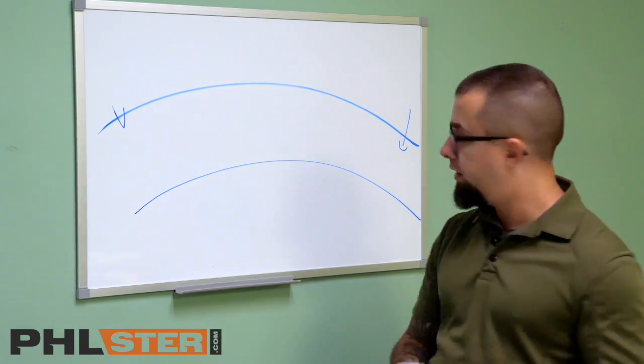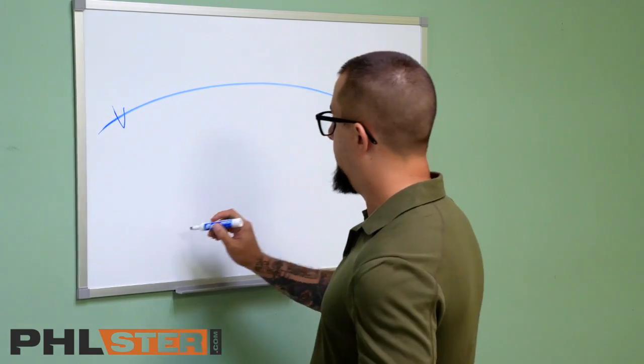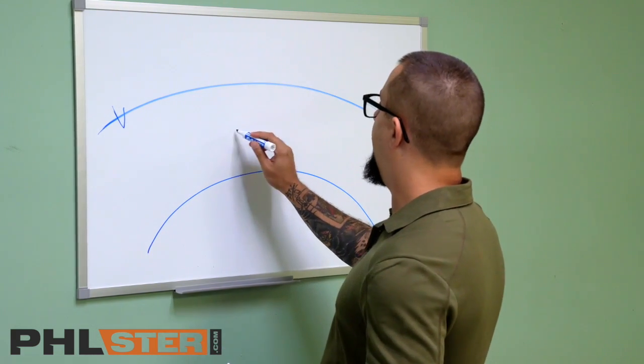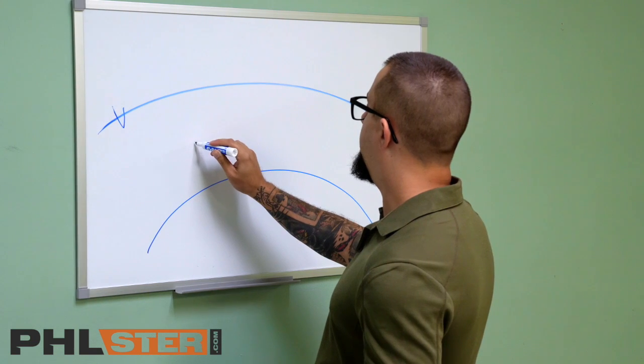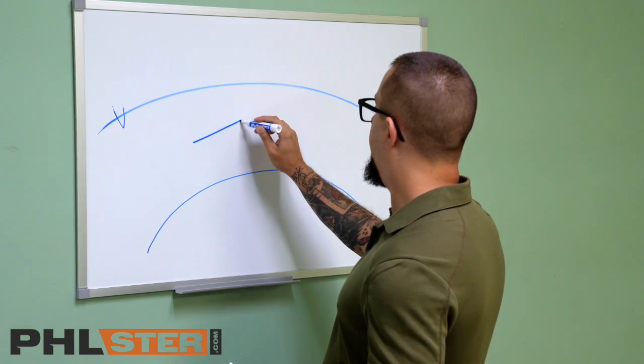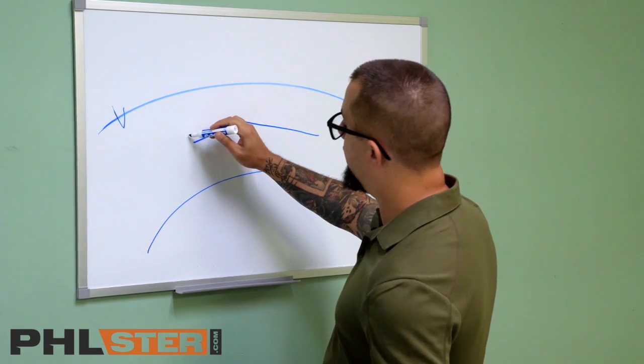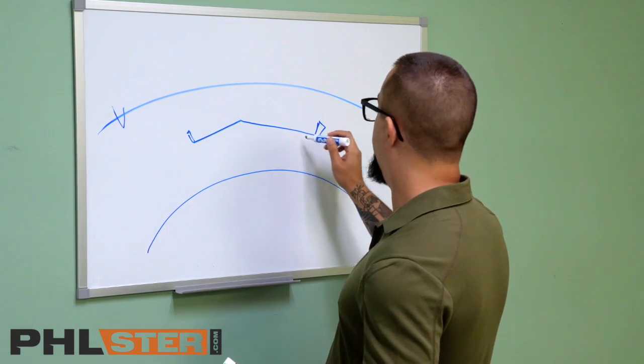Let's do this just for simplicity's sake, there's the body. If we have a magazine carrier here, and a gun here, and there's a concealment wing on this side, and a concealment wing on this side, the gun and the mag.